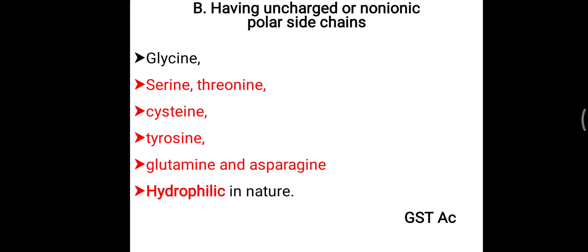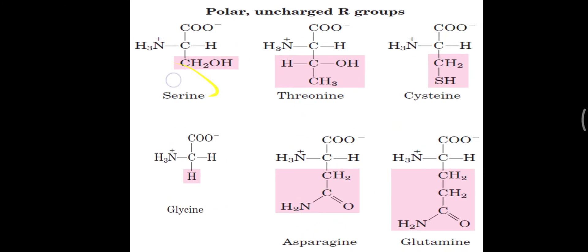You can remember these using the mnemonic GST-AC: G means glycine, S means serine, T means threonine, A means asparagine, and C means cysteine. The T appears two times — tyrosine plus threonine. In the structures, serine, threonine, and glycine have hydrogen and hydroxyl groups making them water soluble. The amide group CONH2 in glutamine and asparagine also makes them water soluble, and cysteine is also water soluble.